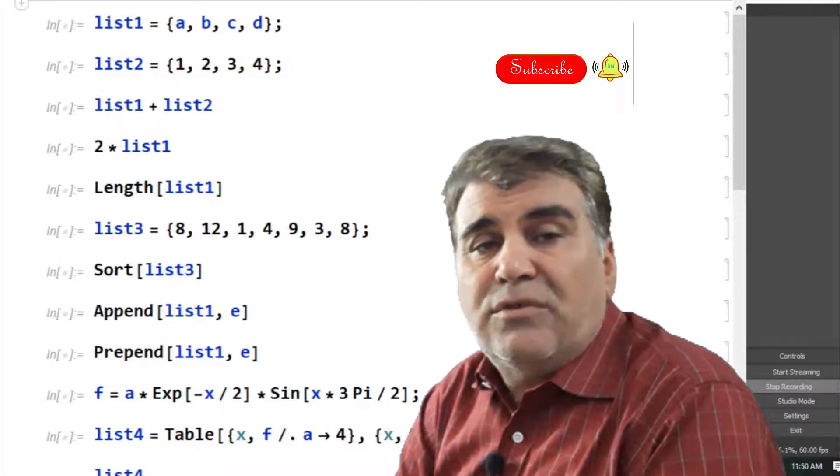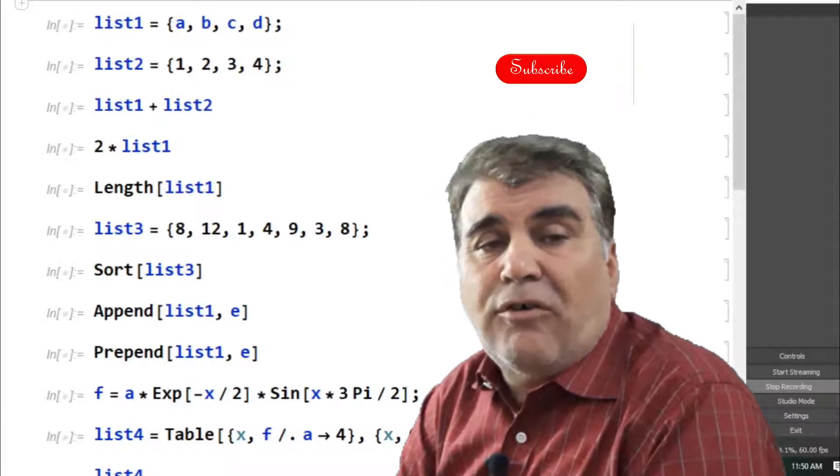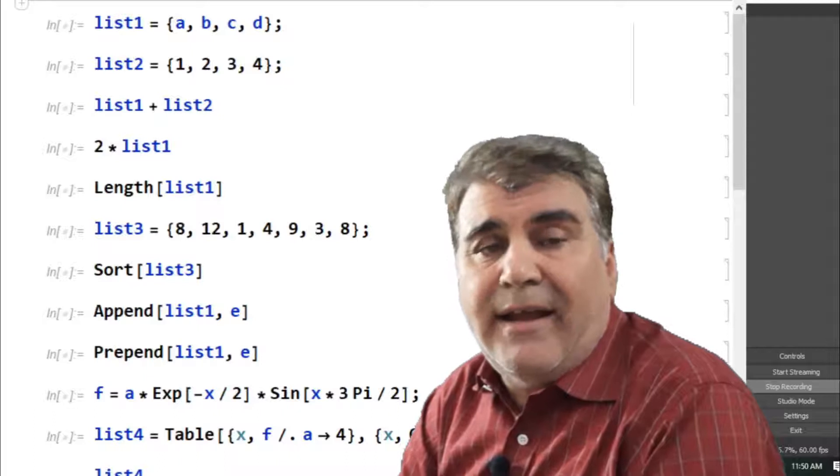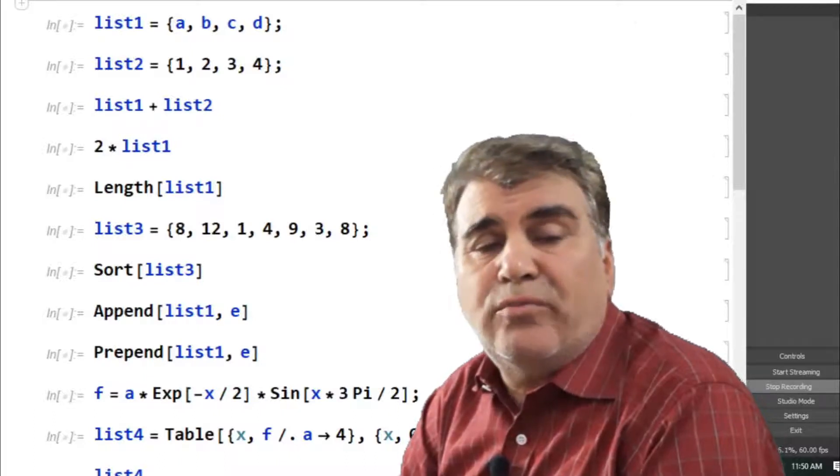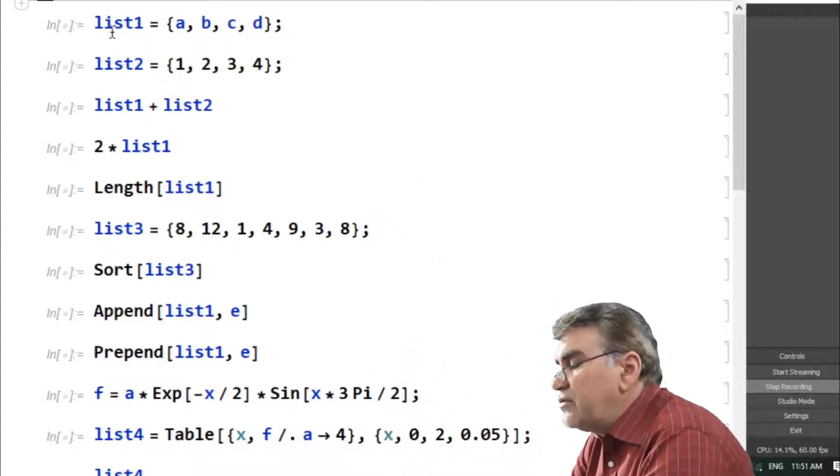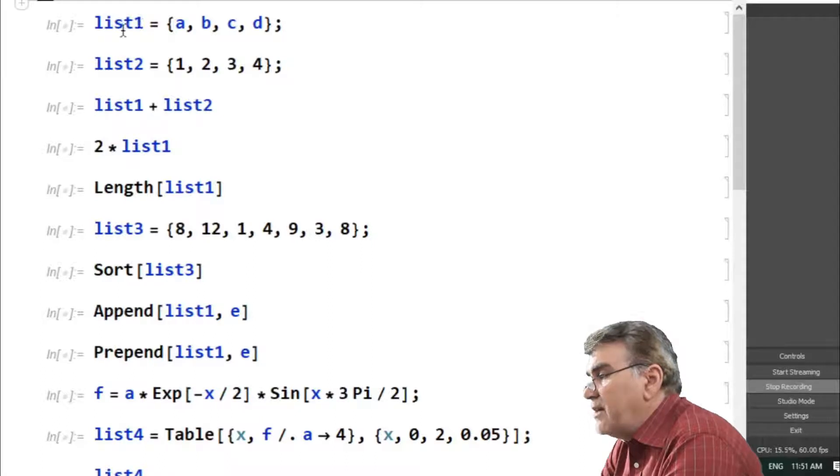A list is a sequence of numbers, alphabets, or anything else separated by commas and enclosed within curly braces. For example, here I have constructed two different lists. One I'm denoting with list1 whose elements are alphabets. Every element is followed by a comma, all enclosed inside curly brackets.